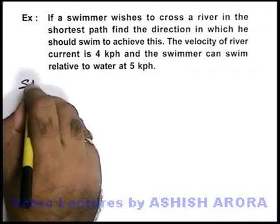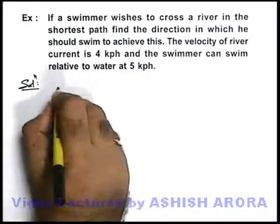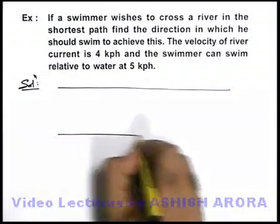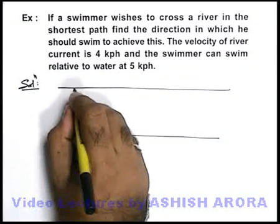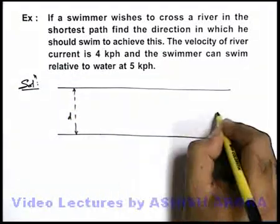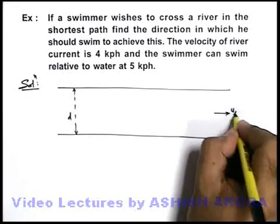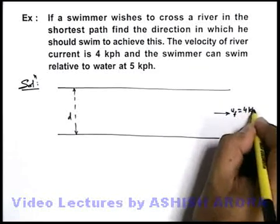Let's first draw the physical situation. Here we are given a river having a width d. It is given that the river current velocity is u_f, that is 4 kilometers per hour.